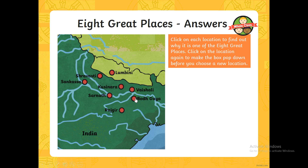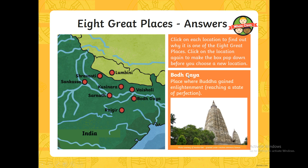We've got Bodhgaya, which is the place where Buddha gained enlightenment. One of the main ideas in Buddhism is reaching enlightenment — a state of perfection, mainly within the mind. That is a big place where a lot of Buddhists go, because it's one of the major parts of Buddhism itself, reaching enlightenment, and that's where it happened for Buddha. That's where Buddhists themselves want to go to try and reach enlightenment themselves.